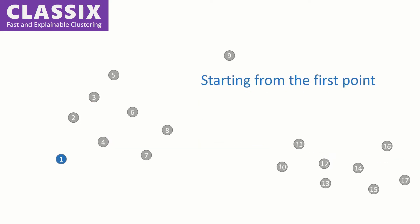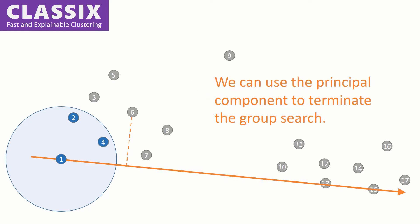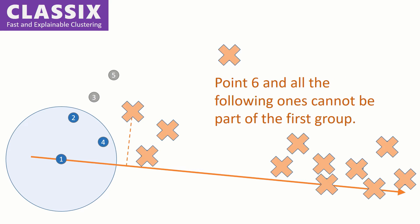Starting from the first point, we compute distances to the following points. All points within a predefined radius become part of a group. We can use the principal component to terminate the group search. Point 6 and all the following ones cannot be part of the first group.